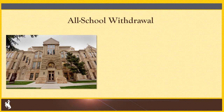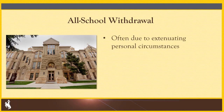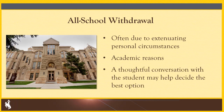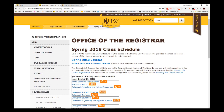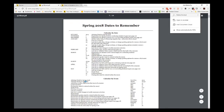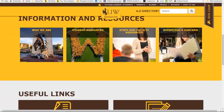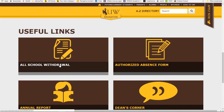If a student wishes to withdraw from all of their courses, it is considered an all-school withdrawal. Students may wish to complete an all-school withdrawal due to extenuating personal circumstances or for academic reasons. Having a thoughtful conversation with a student about why they want to withdraw can help them decide if this is truly the best option for them. The deadline for withdrawing from the university is listed in the class schedule for each semester. Students wishing to withdraw from all courses should initiate the process through the Dean of Students Office.